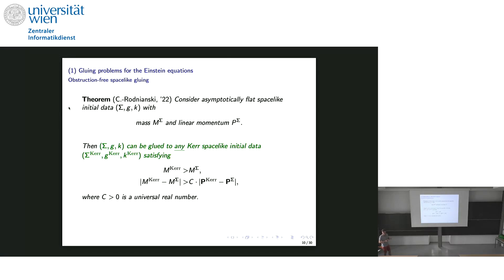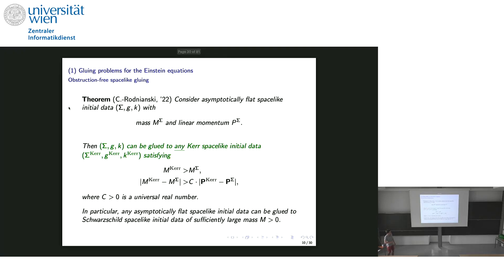However, there are some conditions to be satisfied: the mass of the Kerr that you glue to shall be larger than the mass you started out with — the gluing procedure needs to add a little mass to do its job. And the difference of masses shall be larger than a constant times the difference of the linear momenta. As a corollary, any asymptotically flat space-like initial data set can be glued to spherically symmetric Schwarzschild space-like initial data of sufficiently large mass. You make m-Schwarzschild larger than m-sigma, and since p-Schwarzschild is zero, you just make m-Schwarzschild large enough and you satisfy both inequalities.